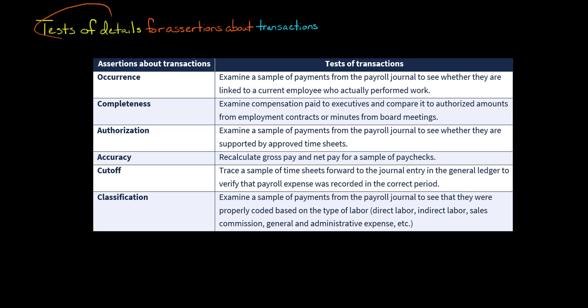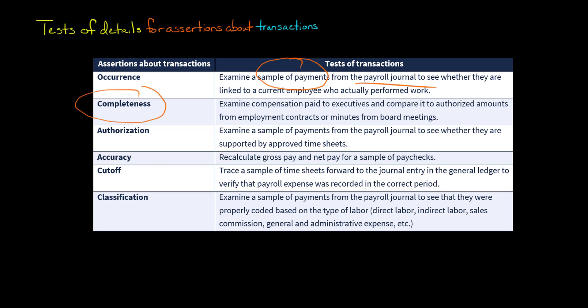Next, let's discuss tests of details for payroll transactions. For the occurrence assertion — that management paid actual employees for actual time worked — the auditor could examine a sample of payments from the payroll journal to verify payments were made to actual employees who did actual work. For the completeness assertion, the main concern is disclosure, particularly related to executive compensation and share-based compensation. The auditor could review details of employment contracts with executives or minutes from board meetings to see if the client's disclosures are sufficient.